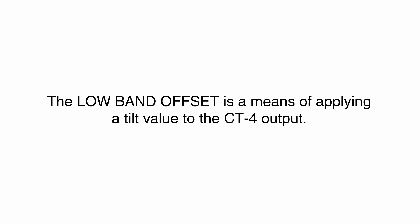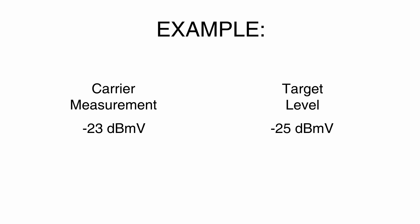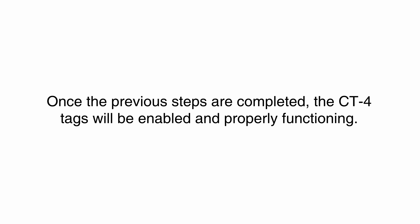The low band offset is a means of applying a tilt value to the CT4 output. For example, if the target level is -25 dBmV and the carrier measures -23 dBmV, then you would enter -2 dB for the low band offset. Navigate to the low res view menu and select the off option to enable normal operation. Once the previous steps are completed, the CT4 tags will be enabled and properly functioning.